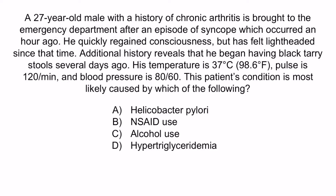From the question stem, notice that this patient has a history of chronic arthritis — a subtle way of indicating chronic pain and likely NSAID use. He also had an episode of syncope, black tarry stools, and is tachycardic and hypotensive. Collectively, these clues are highly suggestive of an upper GI bleed due to a peptic ulcer. The blood in the GI tract explains the stool color, and the syncope, tachycardia, and hypotension are explained by anemia and hypovolemia due to blood loss. The correct answer is B, NSAID use.